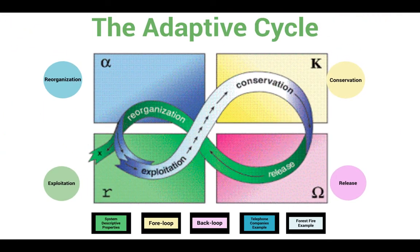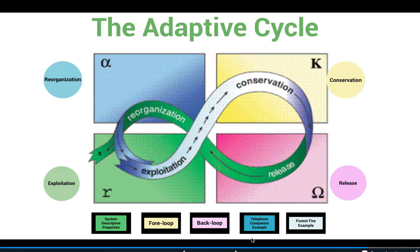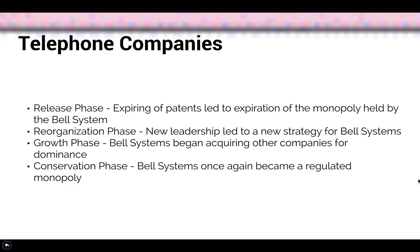Next I'm going to use two examples adapted from Assessing and Managing Resilience in Social Ecological Systems: A Practitioner's Workbook, to demonstrate real-life examples of social ecological systems moving through the adaptive cycle. The first example is the telephone company Bell System back in the 1890s. The expiration of patents caused Bell System to lose its monopoly over the telephone industry, which sparked the release or omega phase. During the reorganization phase, Bell System restructured by hiring new leadership and proposing new business strategies to once again assert dominance. This led them into the growth phase when Bell System began acquiring other companies and exploiting their resources, which finally led to the conservation stage where Bell System once again gained enough power and connections to become a regulated monopoly.